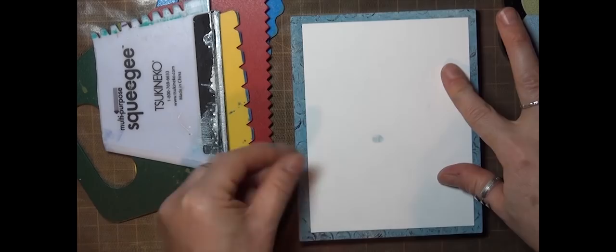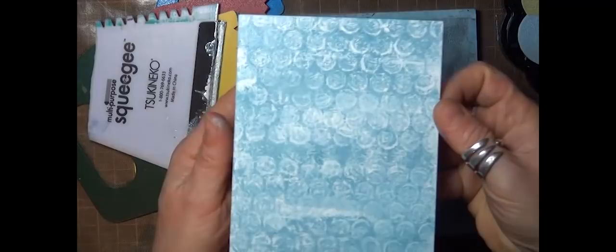I'll take another print, pressing around really well, and you can see where the bubble wrap pulled up the darker ink and the lighter ink shows through.